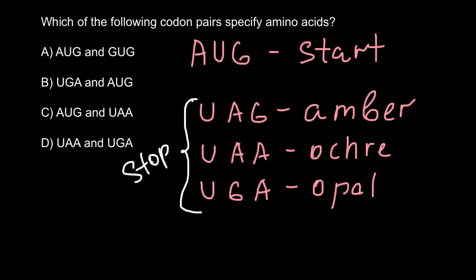Now let's return to our list of answers. Starting with answer D: the first sequence is U, A, A — this is a stop codon that doesn't specify any amino acid, so we can cross out this answer. Answer C has the sequence A, U, G — which is the start codon and also specifies methionine. However, the second codon in answer C is U, A, A — a stop codon that doesn't specify any amino acid. So this pair of codons doesn't both specify amino acids, and we can cross out this answer also.